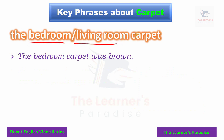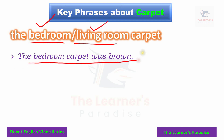Next, we have the bedroom carpet or the living room carpet. Any carpet in your bedroom is the bedroom carpet; if it is in your living room, it is the living room carpet. Example sentence: the bedroom carpet was brown.